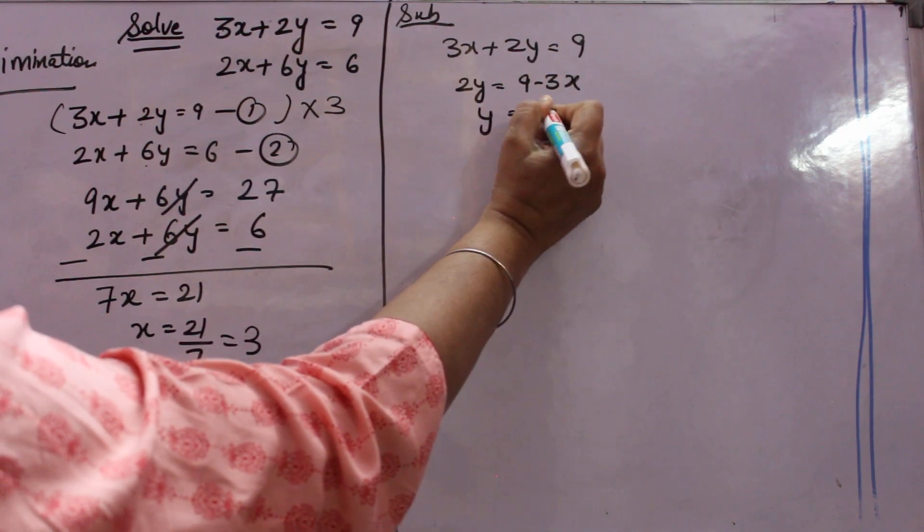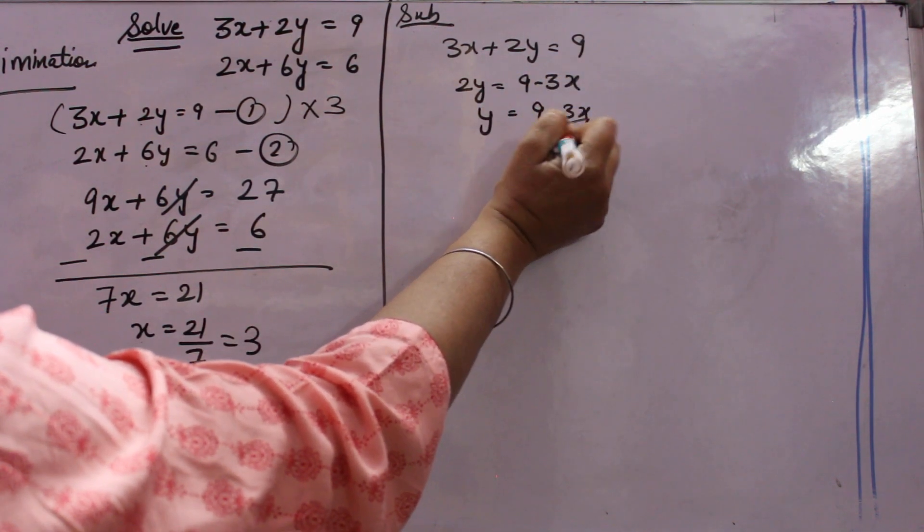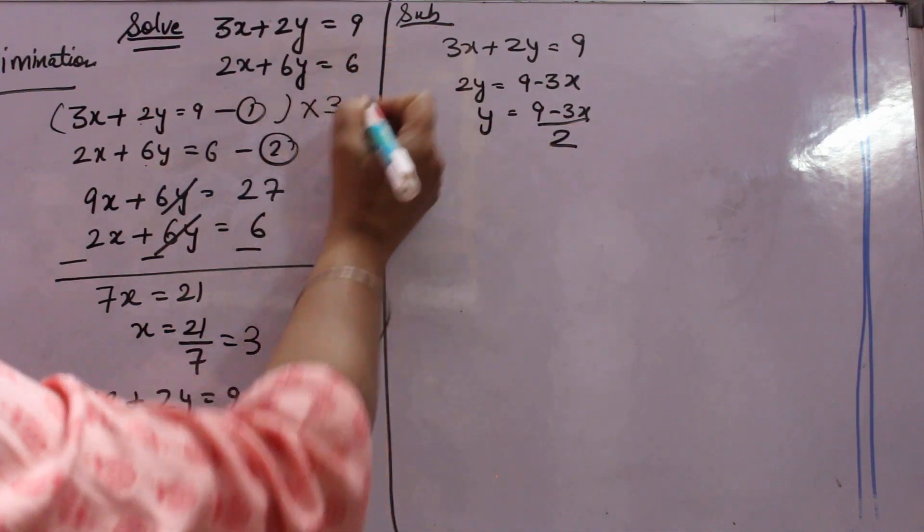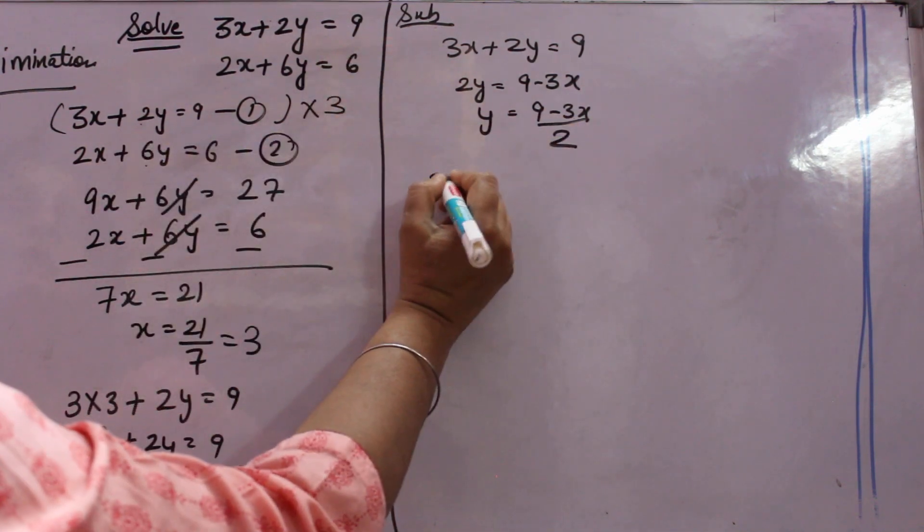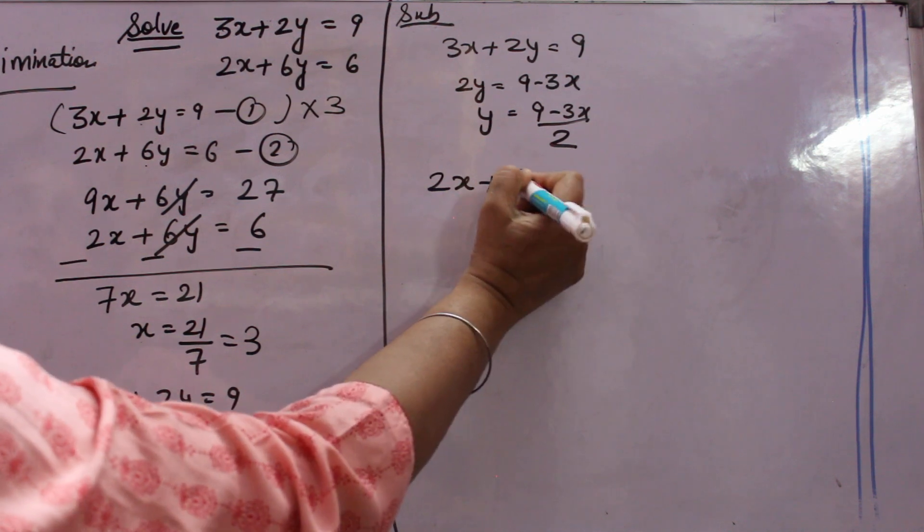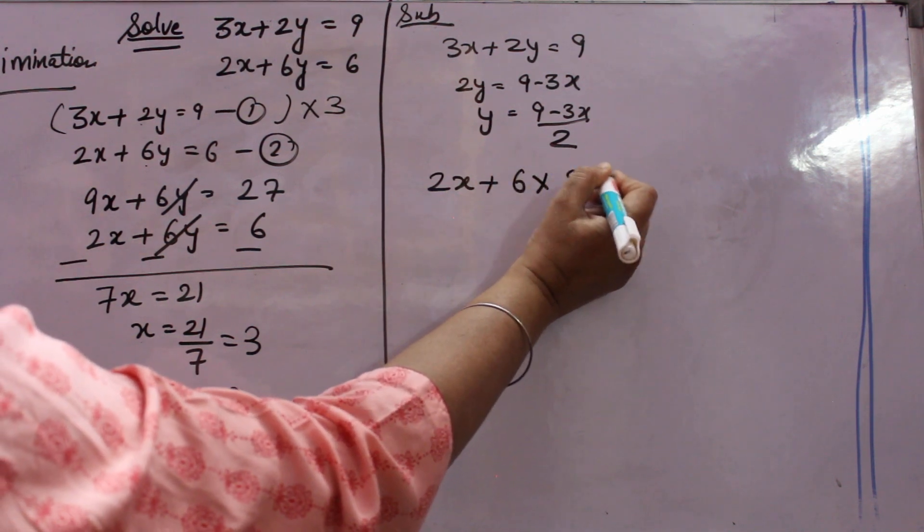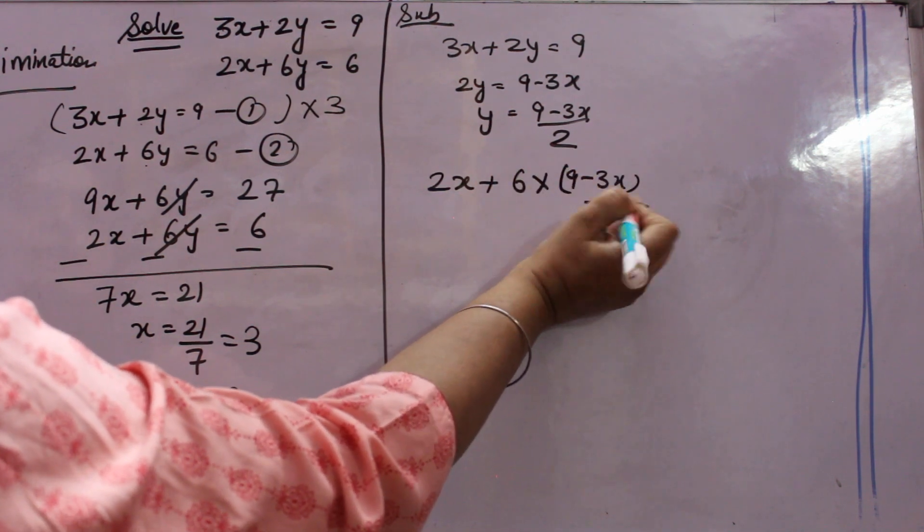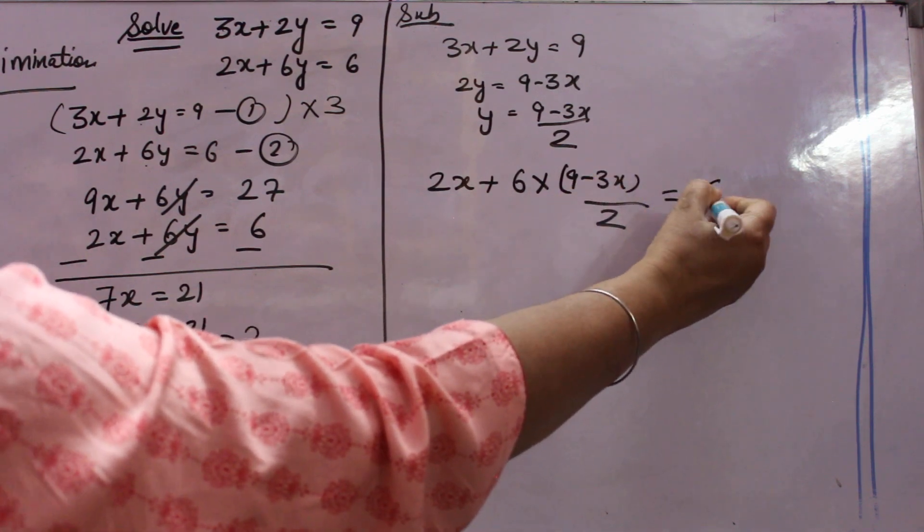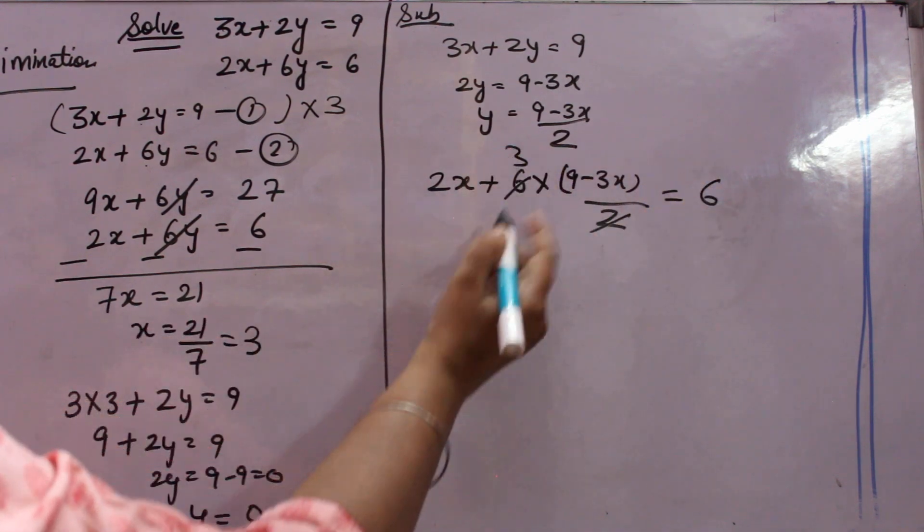So y will come 9 minus 3x over 2. Now this y value you will substitute in second equation that is 2x plus 6y. y value will be 9 minus 3x over 2 equal to 6. 2 into 3 is 6.